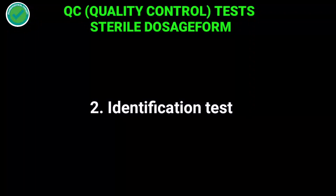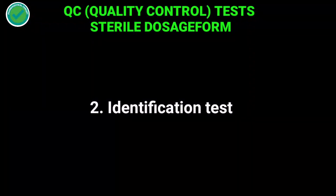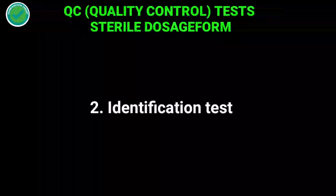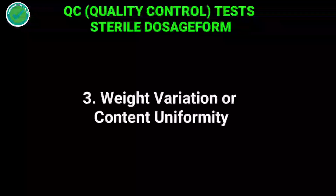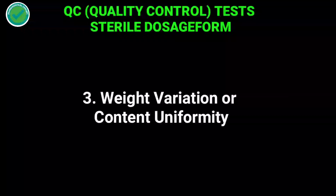The next test is the identification test, which is generally done as an in-process specification. After that is weight variation of content uniformity, which describes about the content present in the formulation.